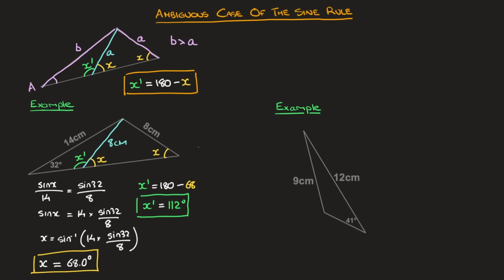In the second example, we need to find the interior angle opposite the 12-centimeter side length. Noticing that this angle is obtuse, we'll call it x prime. Relative to x prime, we have the opposite side length of 12 centimeters, an acute angle of 41 degrees, and its opposite side length of 9 centimeters. Since the side length opposite the angle we're trying to find is the longest, we're faced with the ambiguous case again and need to find two possible angles — one obtuse and one acute.